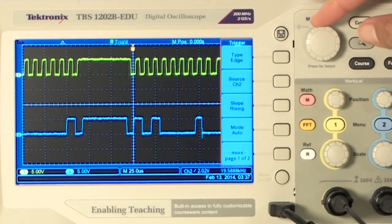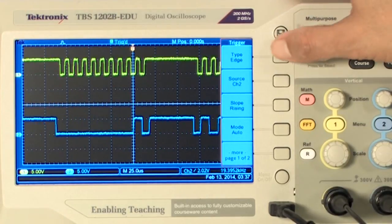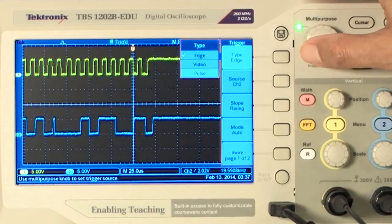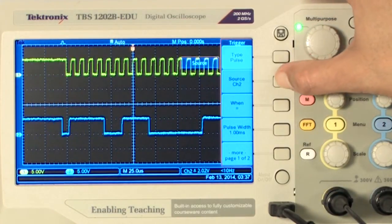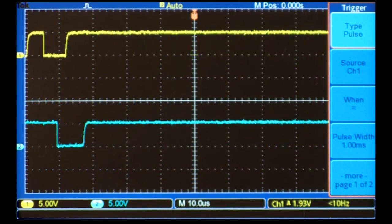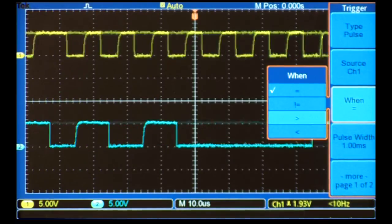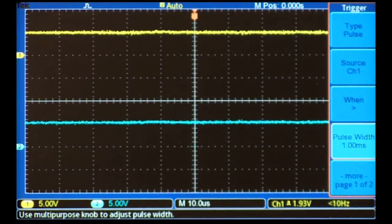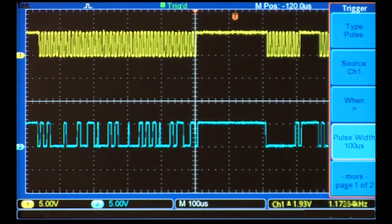The waveforms show up, but they're not very stable. To trigger on a packet, we'll use pulse width triggering to capture whenever the clock is idle for more than 100 microseconds, as it is at the beginning of most of the packets. I'll set the scope to capture a positive pulse greater than 100 microseconds. By using pulse width triggering, I'm able to consistently capture signal information that occurs at the beginning of packets.